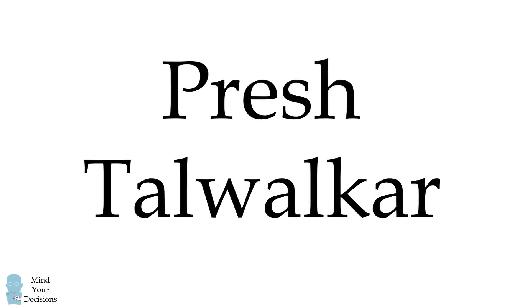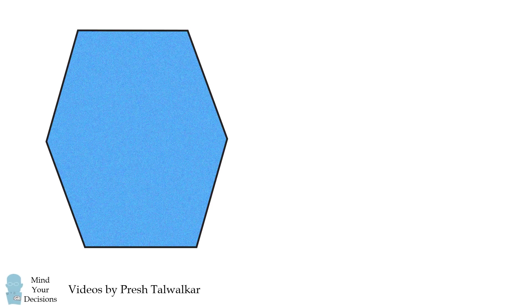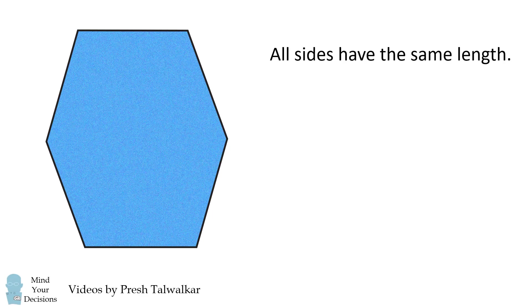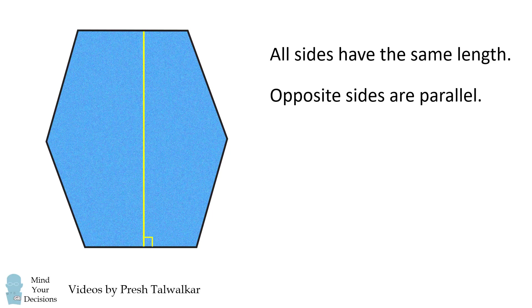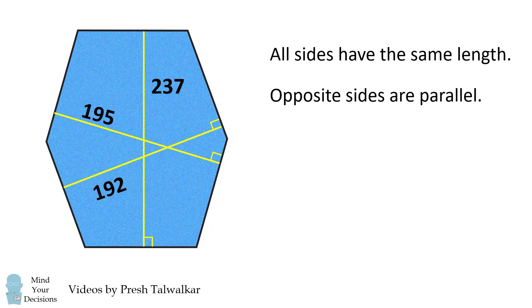Mind your decisions, I'm Presh Talwalkar. In this hexagon, all sides have the same length and opposite sides are parallel. The distances between opposite sides are equal to 237, 195, and 192. What is the area of the hexagon?